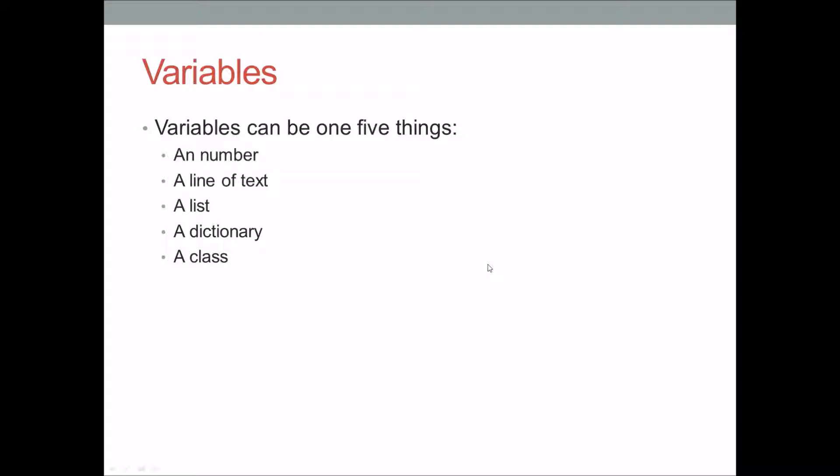First off is variables. Variables can be one of five things: a number, a line of text, a list, a dictionary, or a class.